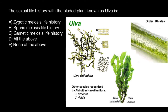In this genus there can be different species, and as you see, their morphology is different. In many cases, the thallus of this alga is only two cells thick.